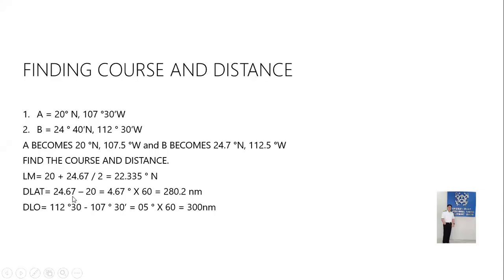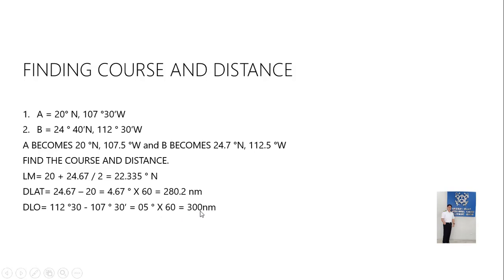After getting the middle latitude, solve for D-lat: 24.67 minus 20 equals 4.67 degrees. Multiply by 60 to convert to nautical miles, since one degree equals 60 nautical miles, giving 280.2 nautical miles. Next, solve for difference of longitude: 112 degrees 30 minutes West minus 107 degrees 30 minutes West equals 5 degrees. Multiply by 60 to get 300 nautical miles.